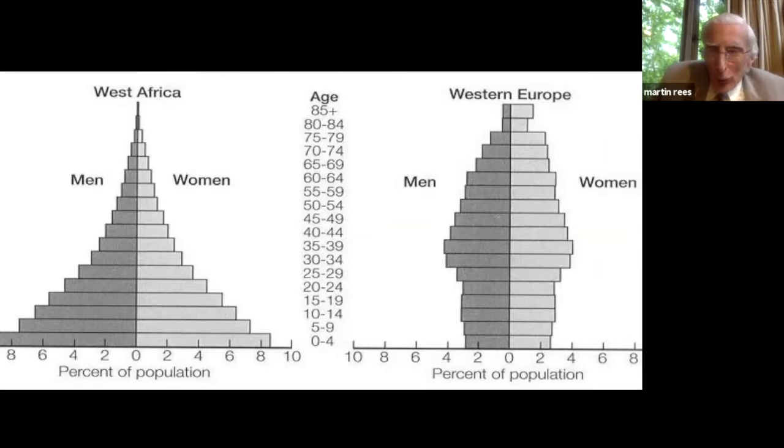Despite doom-laden forecasts made back in the 1960s, food production has kept pace with rising population. Famines still occur, but they're due to conflict or maldistribution, not to overall scarcity. To feed 9 billion people by 2050, however, will require further improved agriculture, water conserving and using genetic modification of crops. And maybe dietary innovations. For instance, converting insects, highly nutritious and rich in protein into palatable food, and making artificial meat, and not eating beef. But if we could do all that, then to quote Gandhi, there'll be enough for everyone's need, if not for everyone's greed.